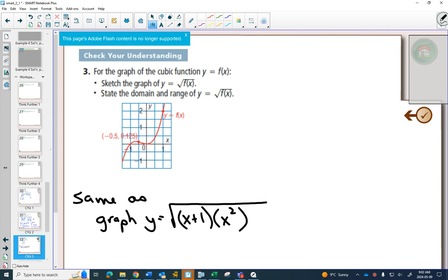You would have to graph the inside first. Well, the inside first has an x-intercept at negative 1, and that graph would go straight through. It has an x-intercept at 0 with a multiplicity of 2, so it should bounce.